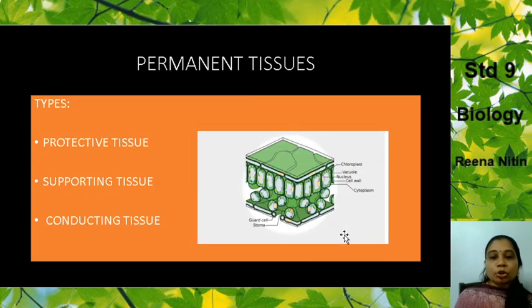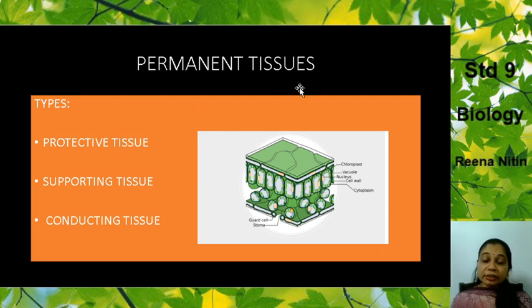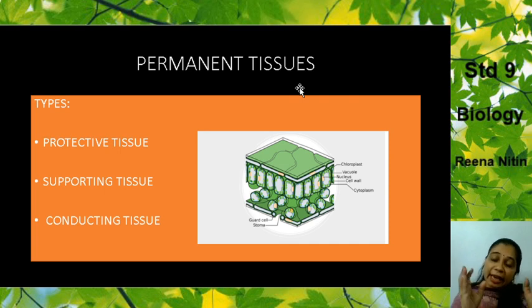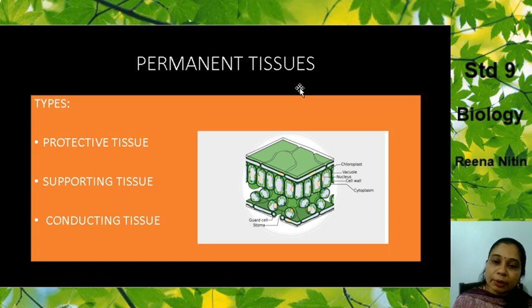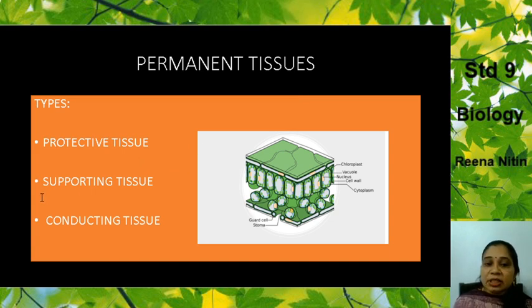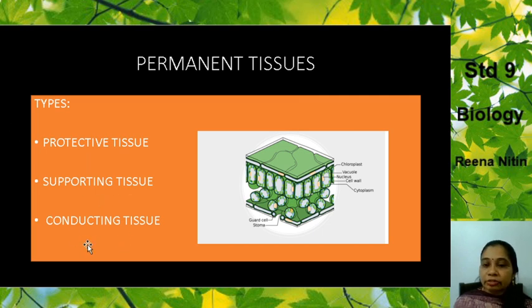Next we go to the permanent tissues. What are permanent tissues? They are the tissues that are already formed from the meristematic tissues and they have specific functions. We are going to study three types in detail: the protective tissue, the supporting tissue, and the conducting tissue.